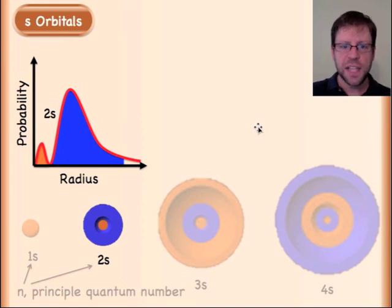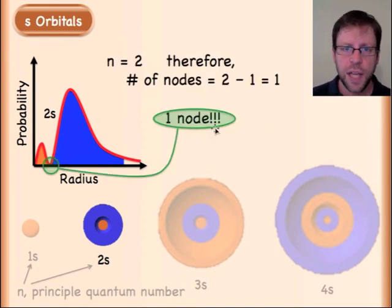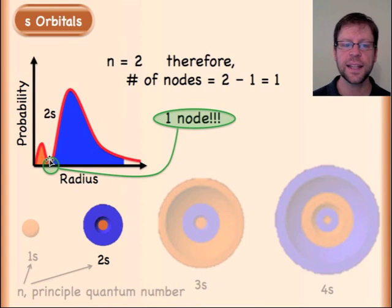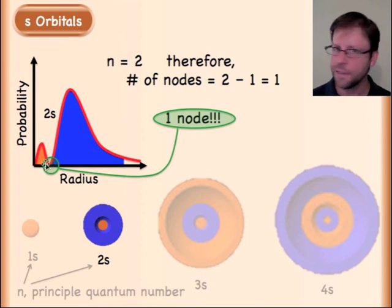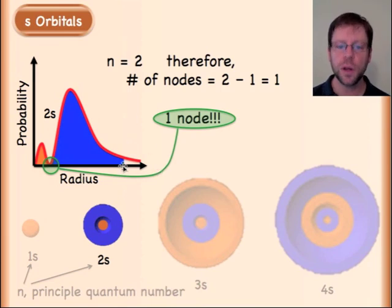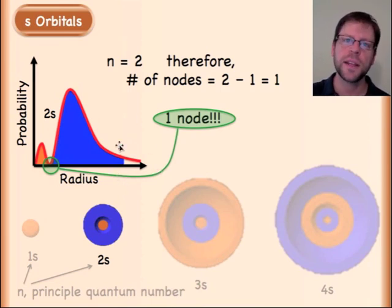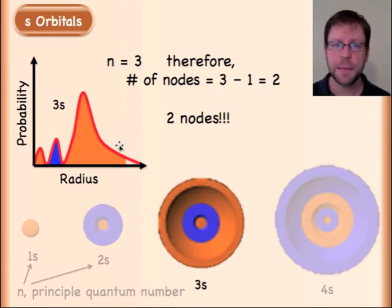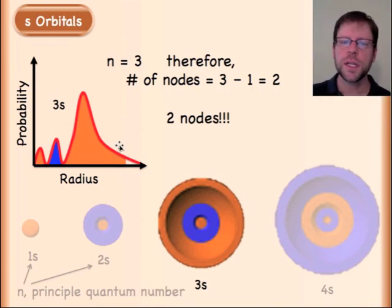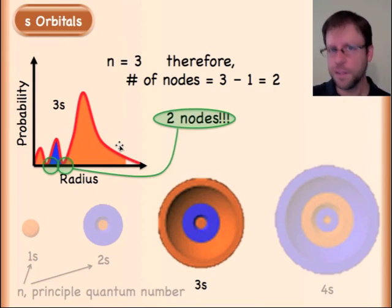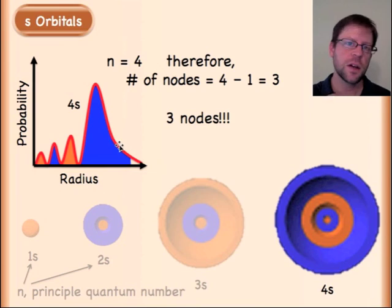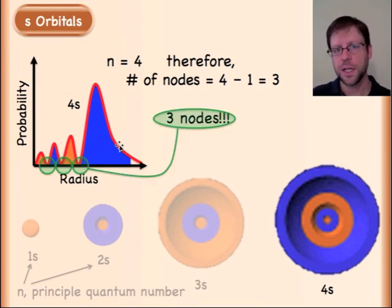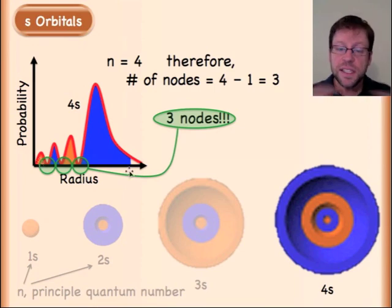The 2s orbital has one node — a location where you cannot have any electron density, so there is zero probability of finding the electron there. Starting from the nucleus, you might find it nearby, you will not find it at the node — impossible — and then there's a whole outer region where you could find it again. The 3s has two nodes, the 4s has three nodes — following the n minus one rule throughout.